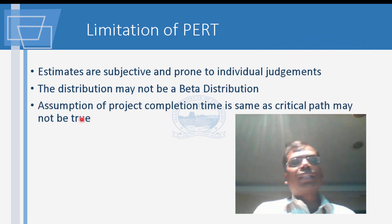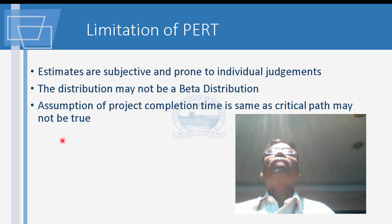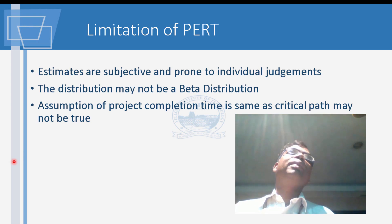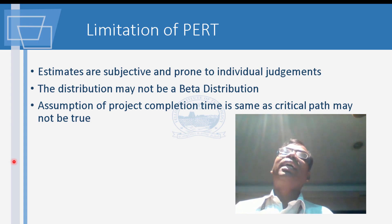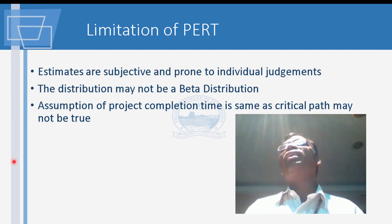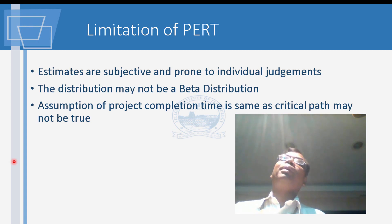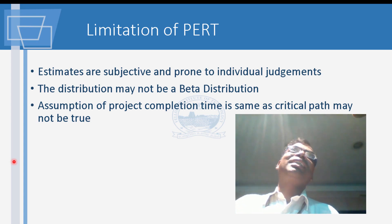The assumption that project completion equals the critical path may not always hold. For example, suppose finishing floor tiles is not critical, but four spare tiles break — now because of unavailability of matching tiles you cannot declare the job finished. If you go to the shop, you may not find the same color or quality tile again, and the owner won't accept mismatched tiles.